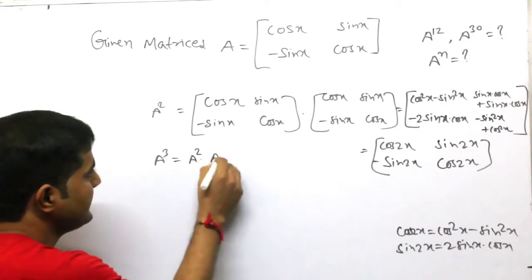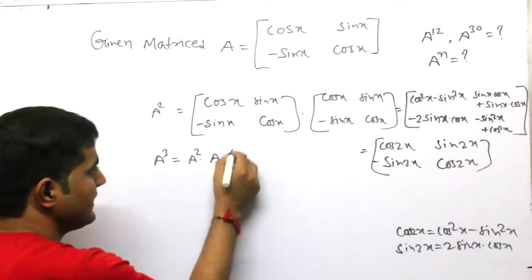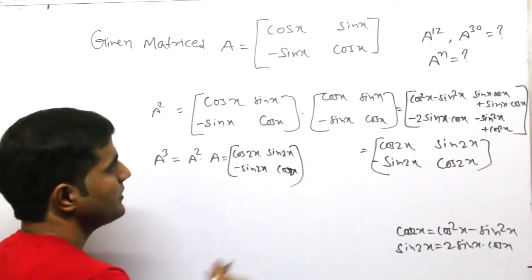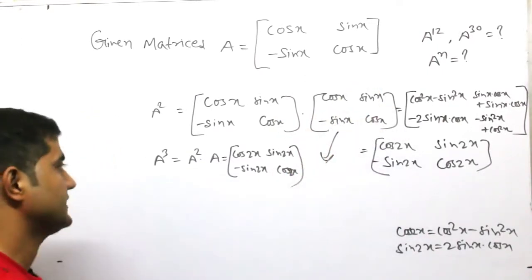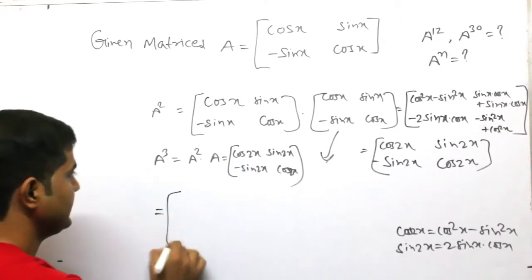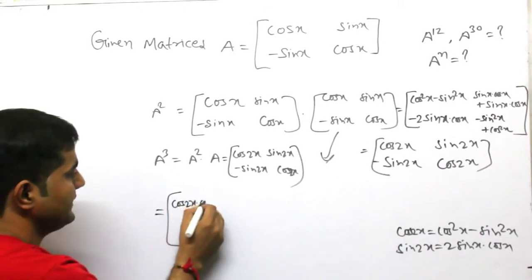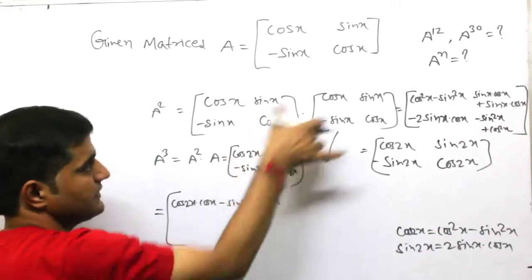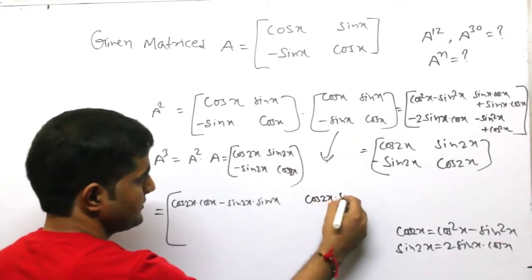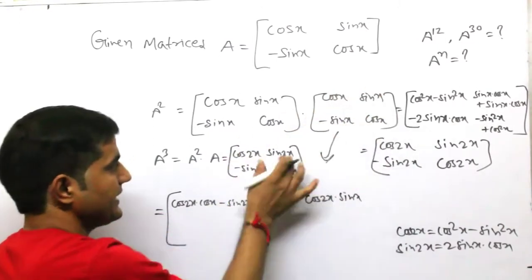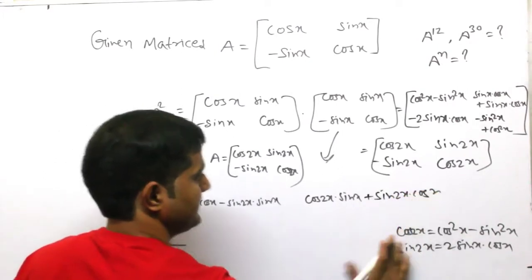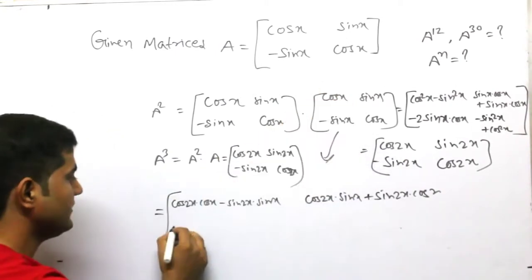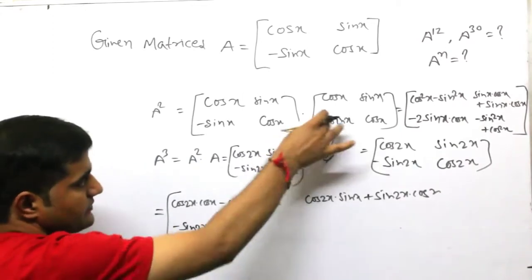Our target is A power 3. We will multiply A square by A. A square is already [[cos 2x, sin 2x], [-sin 2x, cos 2x]], and A is [[cos x, sin x], [-sin x, cos x]]. Multiplying these: the top-left entry is cos 2x·cos x minus sin 2x·sin x. The top-right entry is cos 2x·sin x plus sin 2x·cos x. For the bottom row: minus sin 2x·cos x minus cos 2x·sin x.